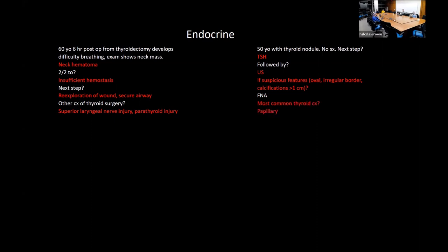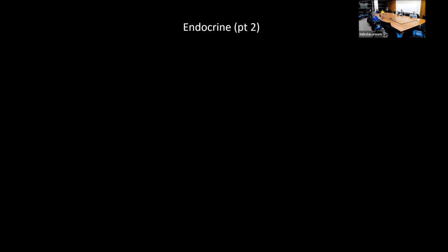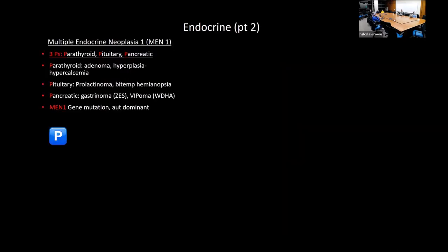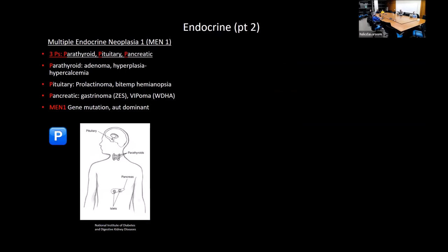The most common hereditary cause of thyroid cancer is medullary carcinoma associated with MEN syndromes. MEN1 (three P's): parathyroid, pituitary, and pancreatic tumors. MEN2: increased risk of medullary thyroid cancer and pheochromocytoma (RET gene mutation) — always assess for pheochromocytoma before surgery to give alpha blockers first. Treatment of thyroid cancer: resection, monitor calcitonin for medullary, give T4 post-op to suppress TSH and prevent growth.